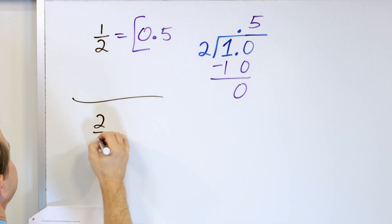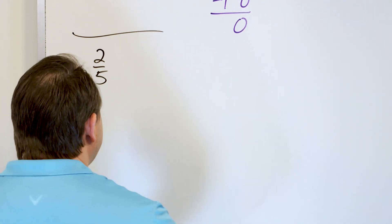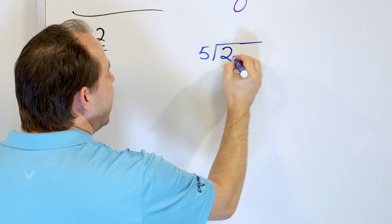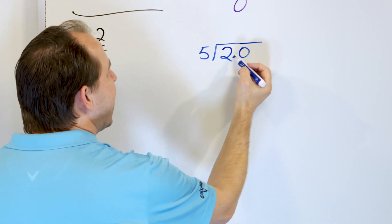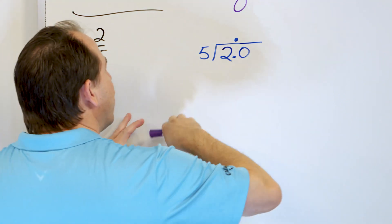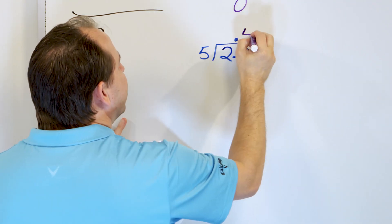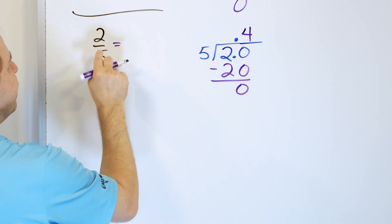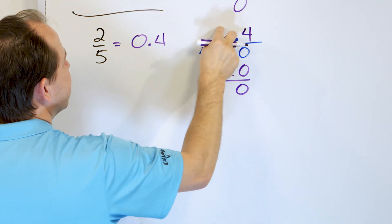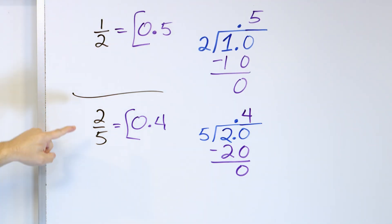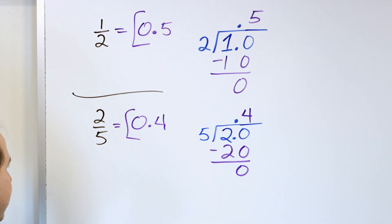Let's take a look at two fifths. We take the numerator two and divide it by five. Since we can't really do this division, we make it 2.0 and place the decimal in the answer above. Ignoring the decimal, five times four is 20 — multiply, subtract, and we get a remainder of zero. So two fifths equals 0.4.